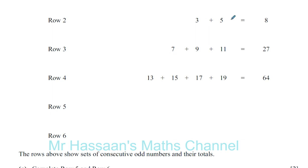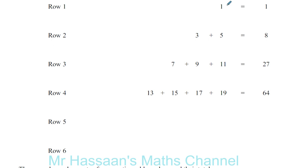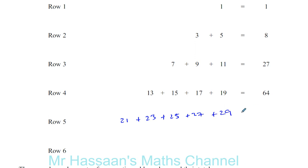We can see that the first row has the first odd number, the second row has the second and third consecutive odd numbers added together, then the third row has the next 3, and the fourth row has the next 4. So the fifth row is going to be the next 5 consecutive odd numbers: 21 plus 23 plus 25 plus 27 plus 29. You can see that these totals are cube numbers — 1 cubed, 2 cubed, 3 cubed, 4 cubed — so this should be 5 cubed, which is 125.